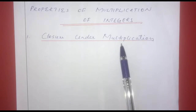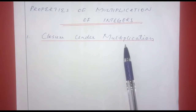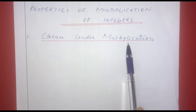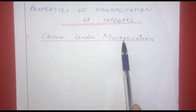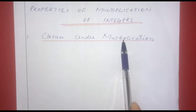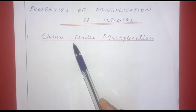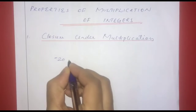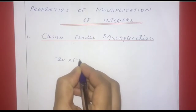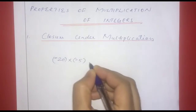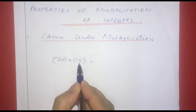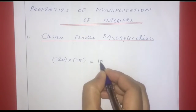Closure under multiplication. We have to multiply the integers. For example, negative 20 into negative 5. What is the answer? 20 into 5 is 100.